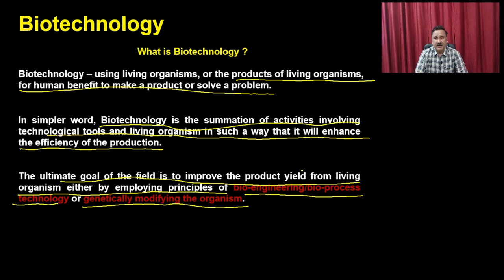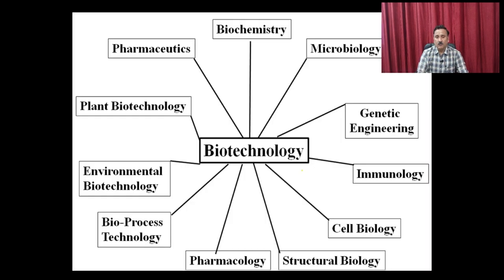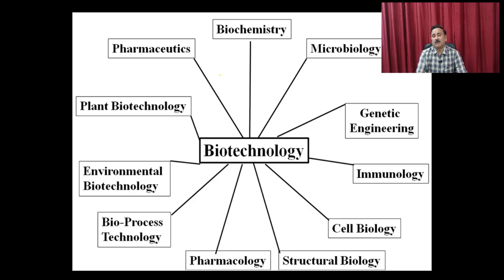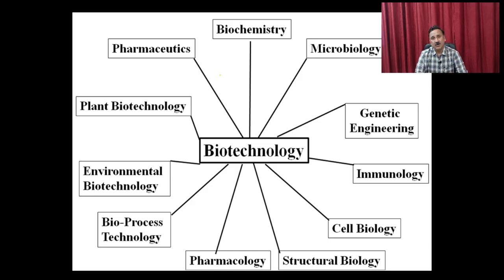When we talk about biotechnology, it requires inputs from different fields: biochemistry, microbiology, genetic engineering, immunology, cell biology, structural biology, and pharmacology. Because when you want to develop a drug, improve a crop yield, or perform any such activity, you require information about that particular system, which comes from biochemistry or microbiology.